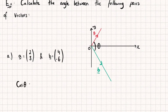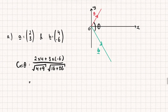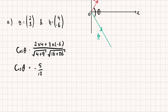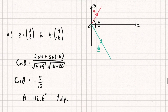Our formula says cosine theta equals a dot b, so that's 2 multiplied by 4 plus 3 multiplied by -6, divided by the magnitude of a — which is the square root of 2² plus 3² — multiplied by the magnitude of b — which is the square root of 4² plus (-6)². Putting this into my calculator gives negative 5 over 13 equal to cosine theta, and taking the inverse cosine gives an angle of 112.6 degrees to one decimal place.